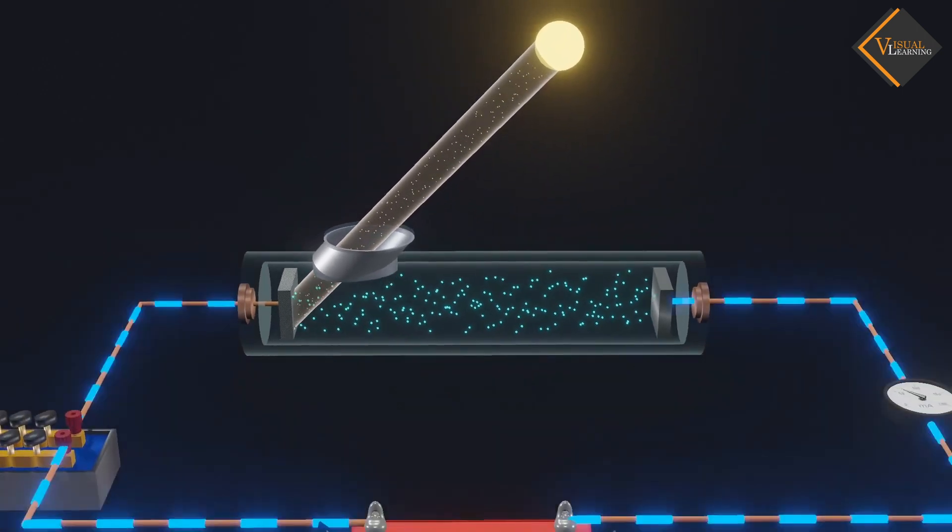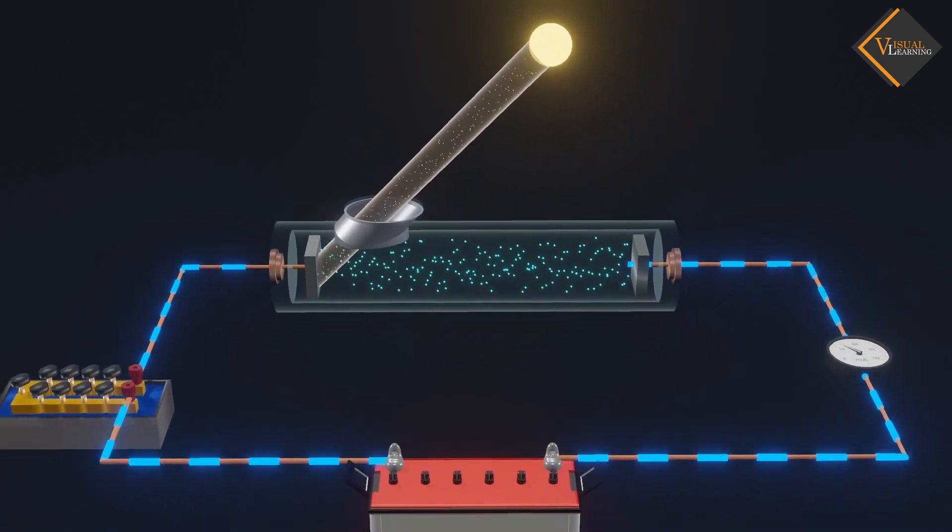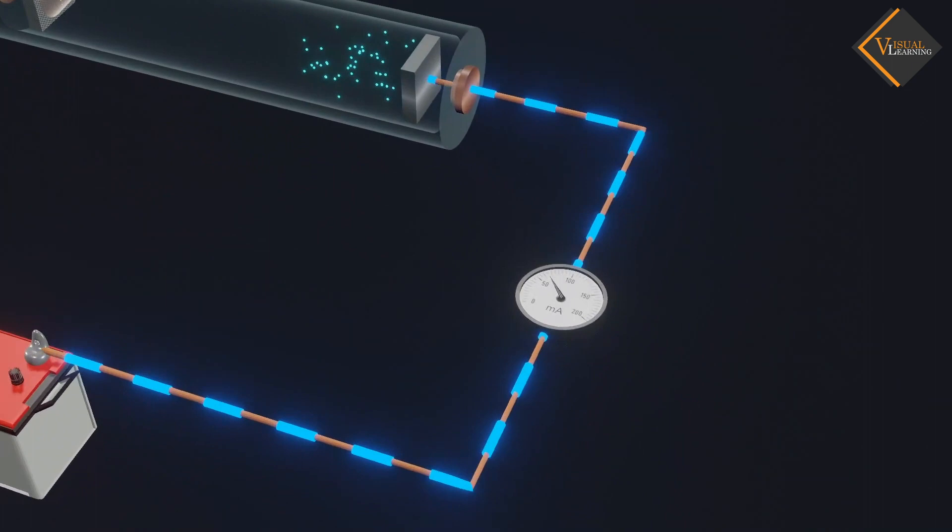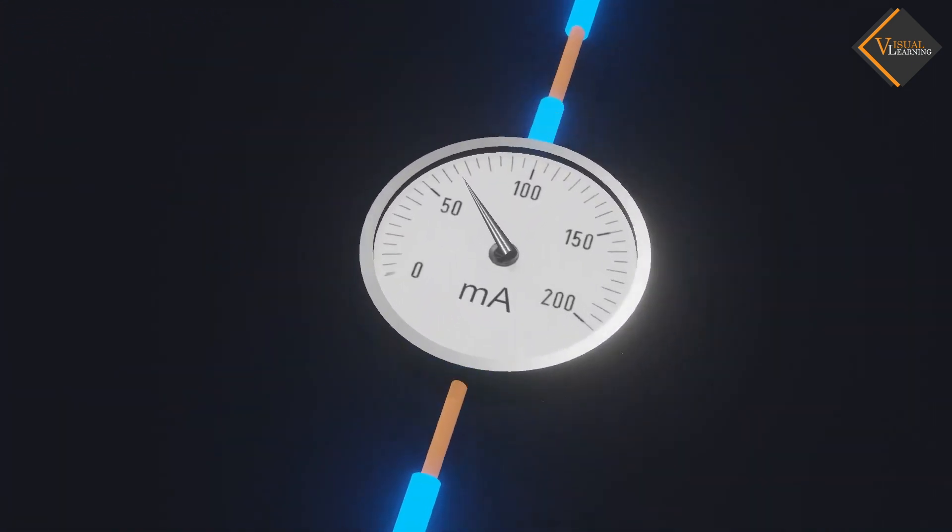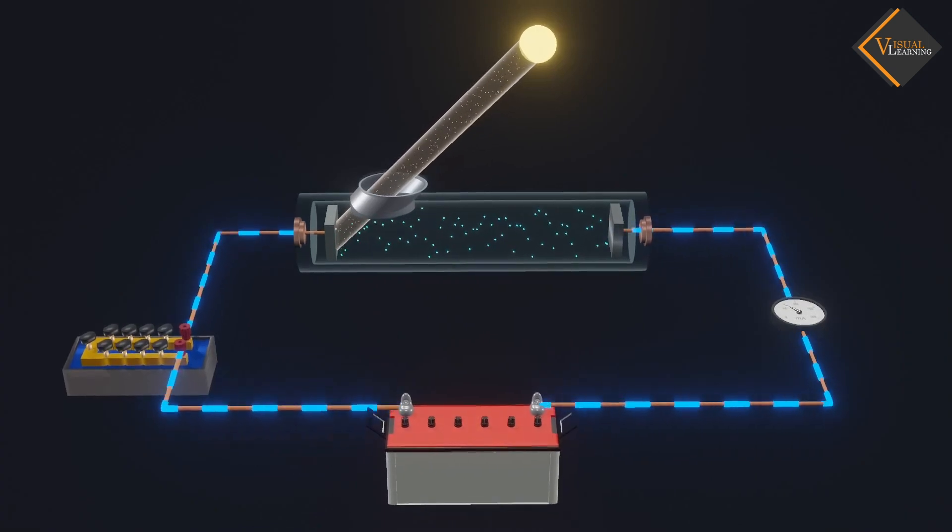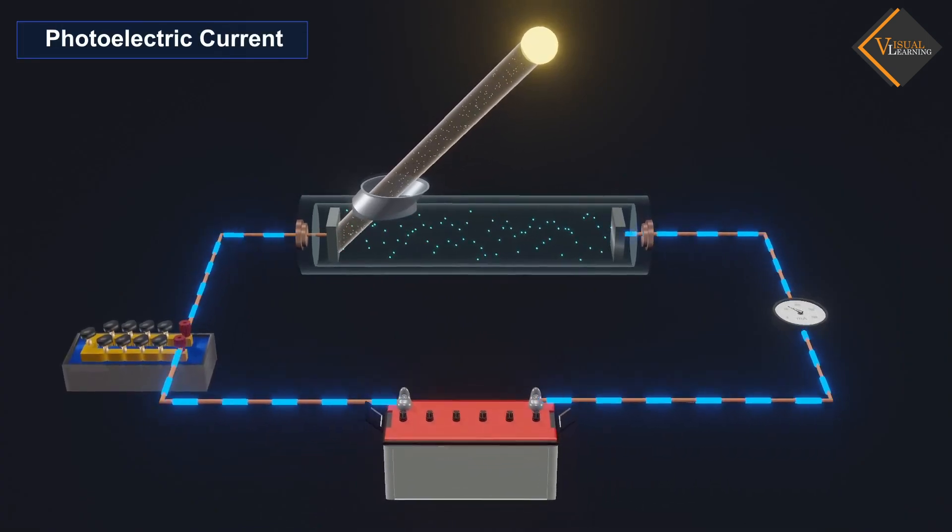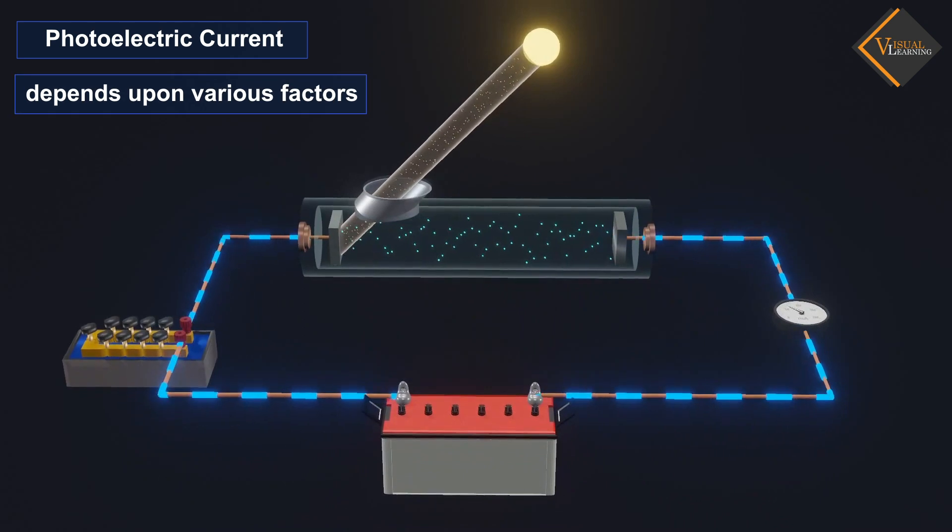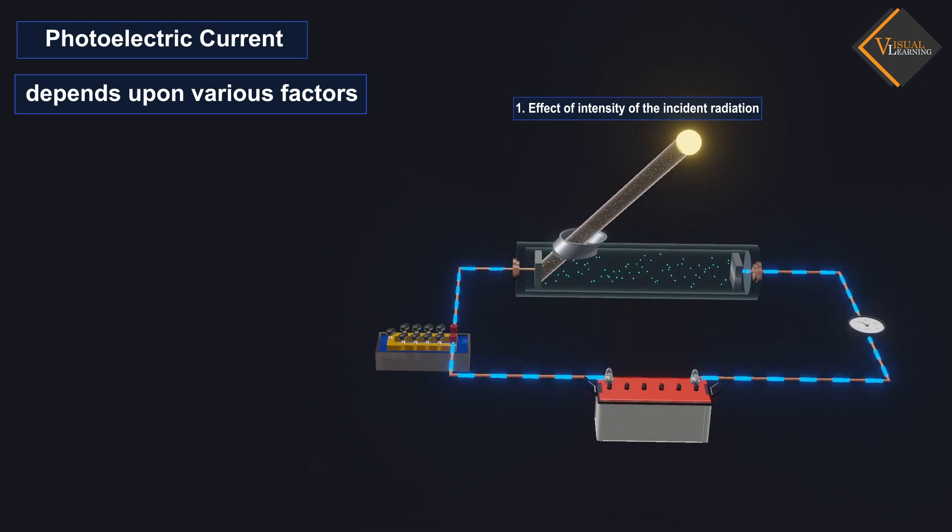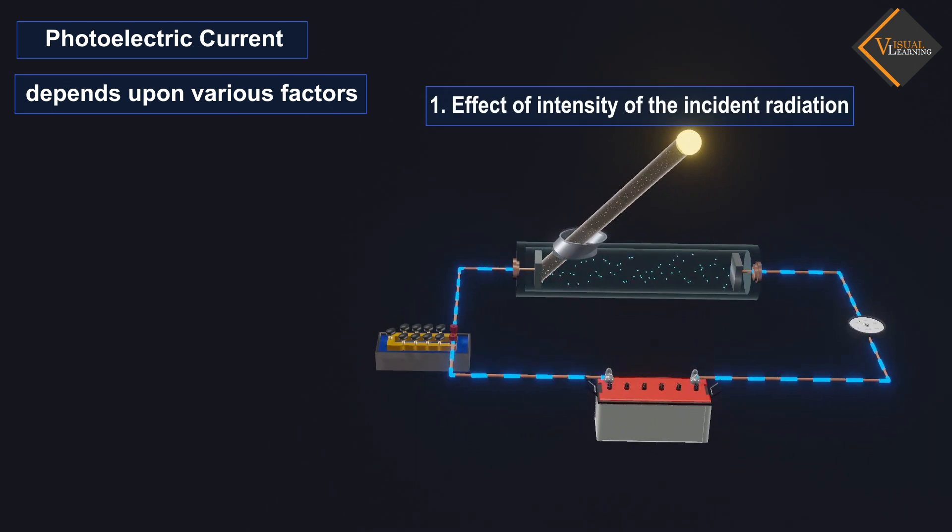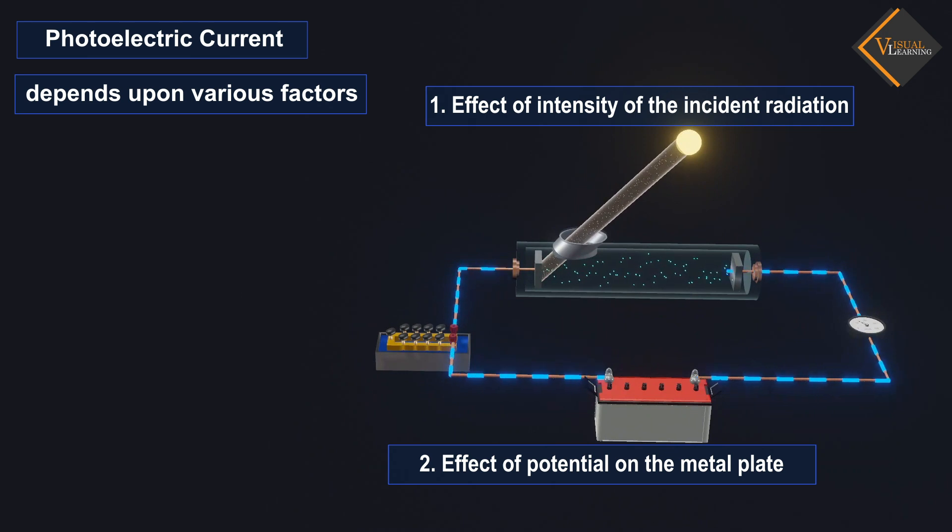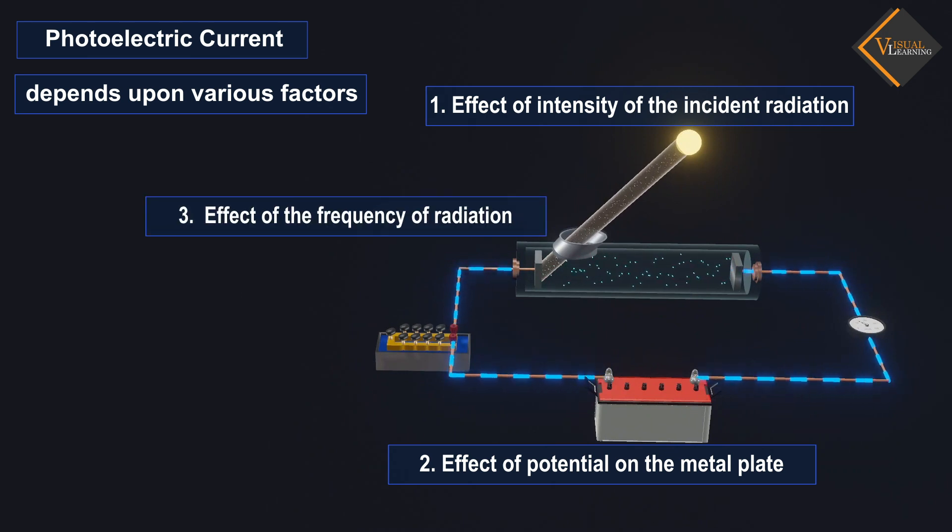This flow of electrons creates a circuit current which we call the photoelectric current and can be measured using a micro-ammeter. In this experimental study, it was found that the photoelectric current varies depending on certain factors. These factors are: effect of intensity of the incident radiation, effect of potential on the metal plate, and effect of the frequency of radiation.